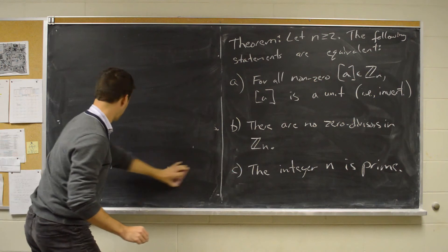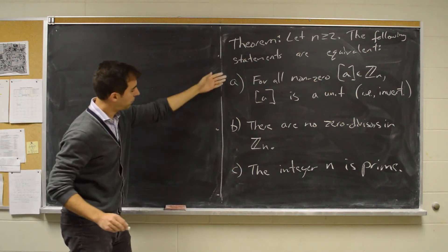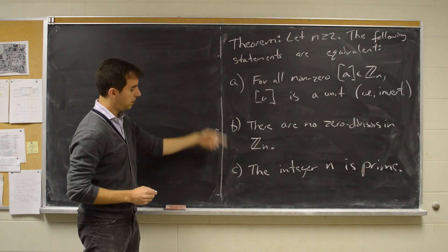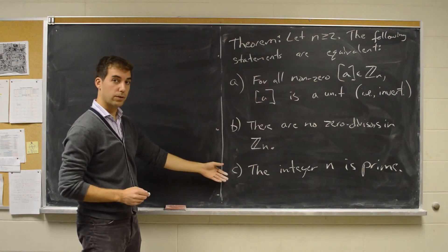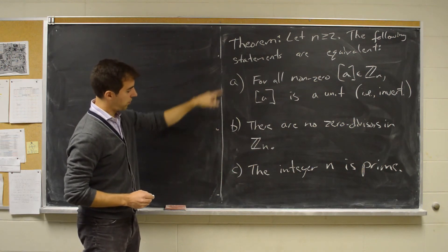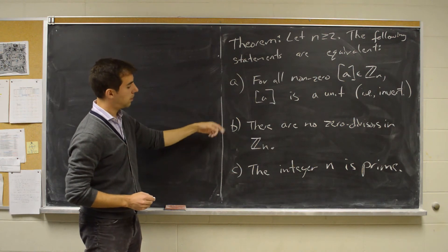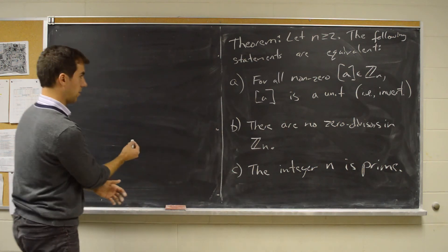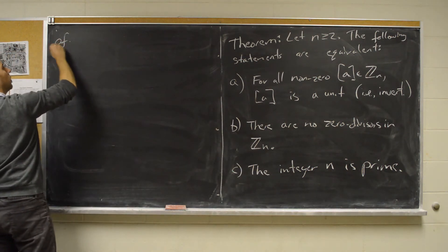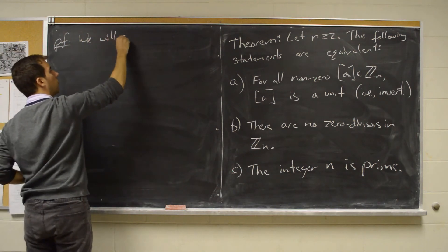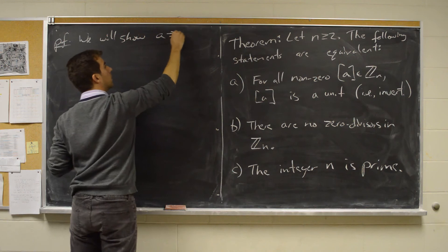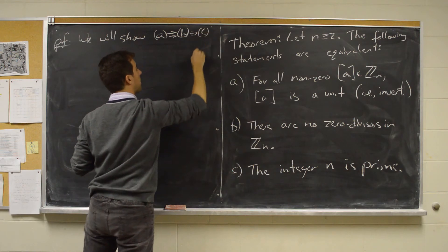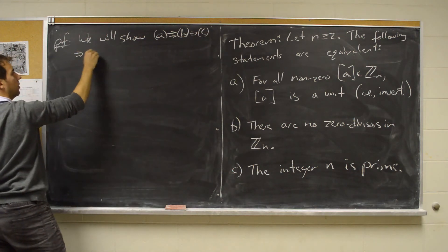To prove three equivalent statements, we do a chain: prove A implies B, B implies C, and C implies A. That's enough to show each statement is equivalent to any other. We will show A implies B implies C implies A.